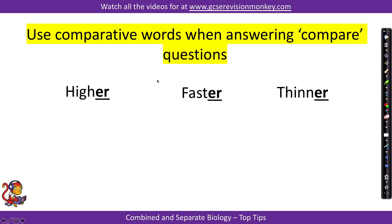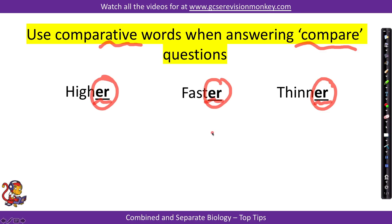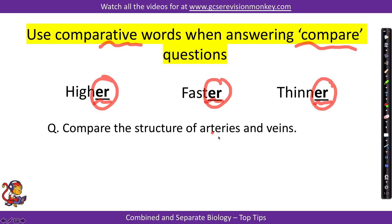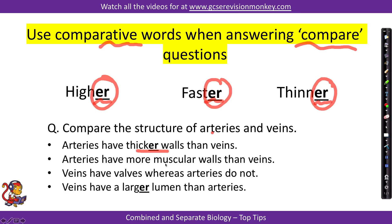Tip number four. Use comparative words when asked to compare things. Don't just write 'high' — write 'higher,' 'faster,' or 'thinner.' For example, when comparing arteries and veins: 'arteries have thicker walls than veins,' 'arteries have more muscular walls than veins,' or 'veins have larger lumen than arteries.' For statements where a direct comparison doesn't apply, you can use 'whereas' to link them, for example 'veins have valves whereas arteries do not.' Mark schemes underline these comparative endings to confirm you are actually comparing.